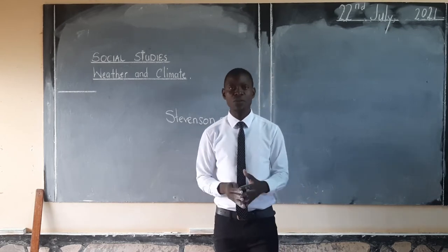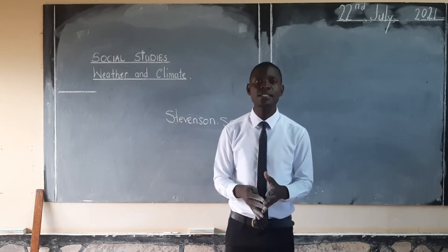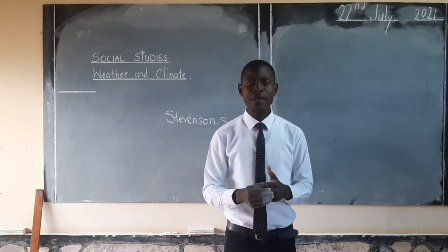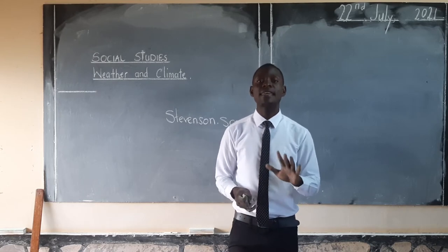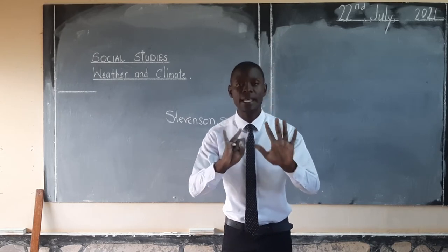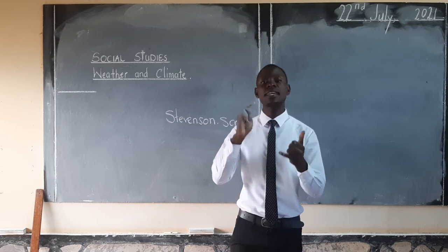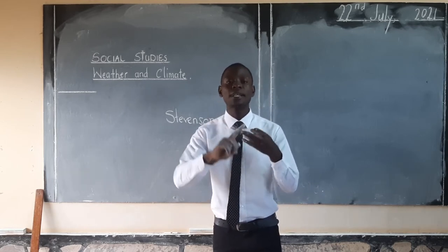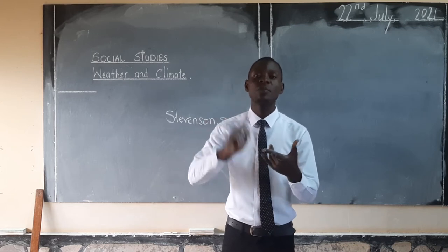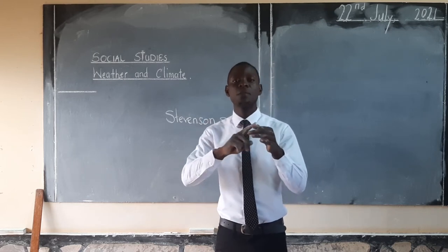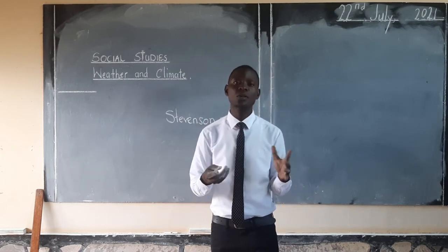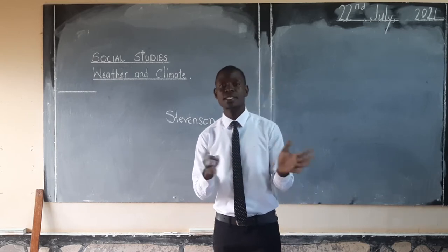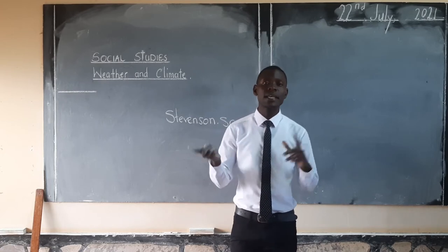From the descriptions of weather, we also said there are elements of weather. There are just seven elements of weather. We have temperature, we have rainfall, we have cloud cover, we have humidity, we have atmospheric pressure, and others. These are some of the things we looked at the other day.